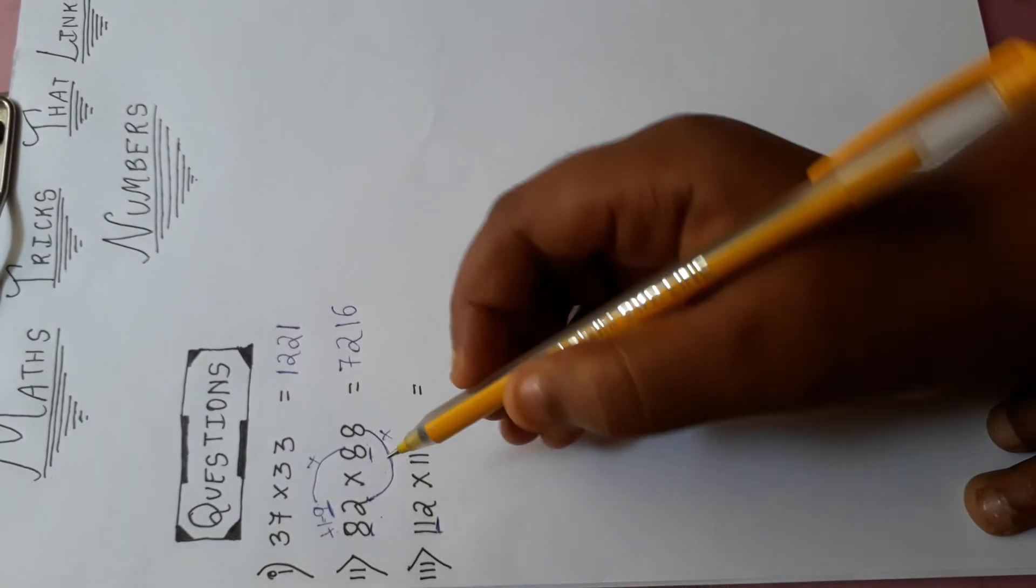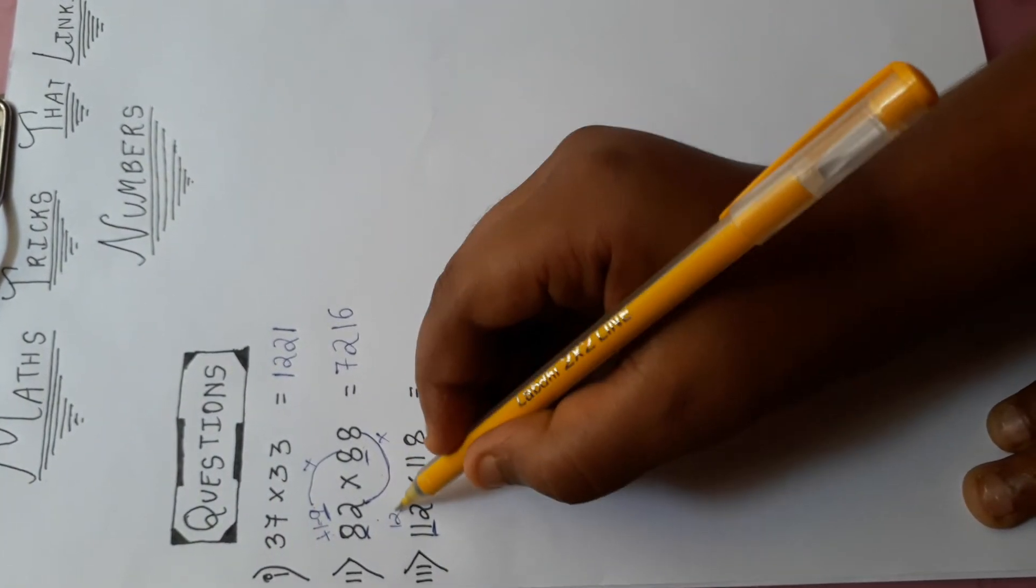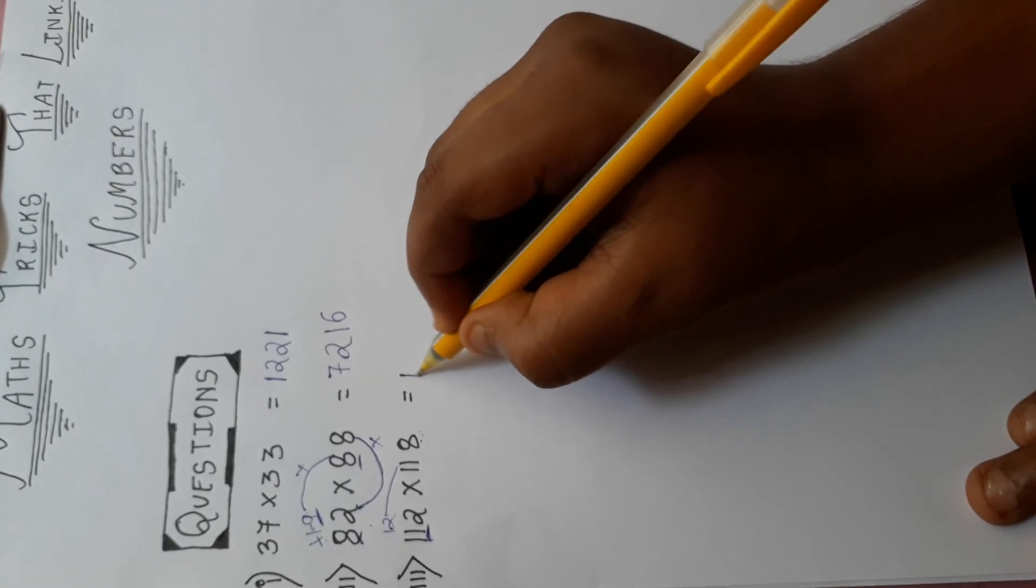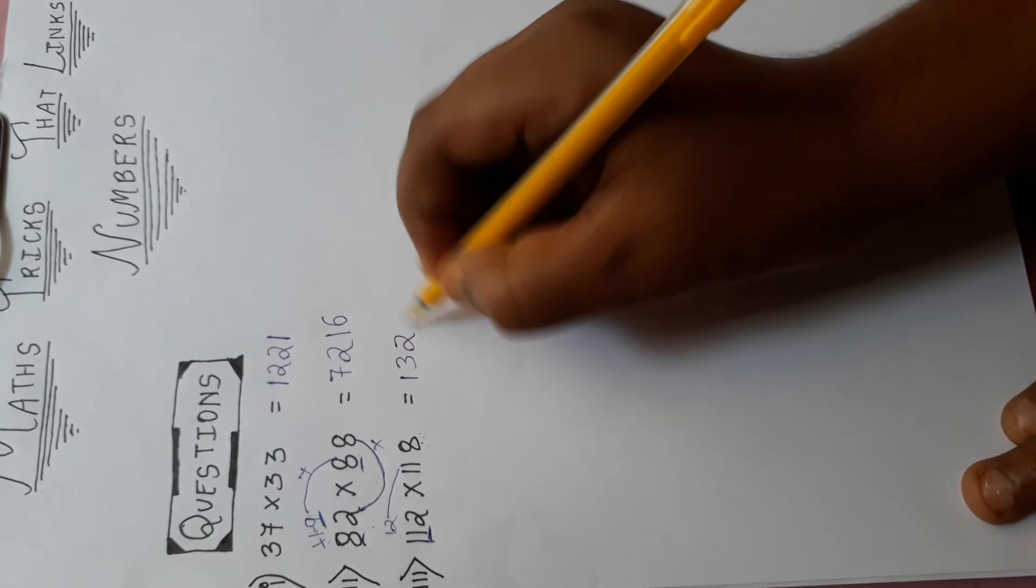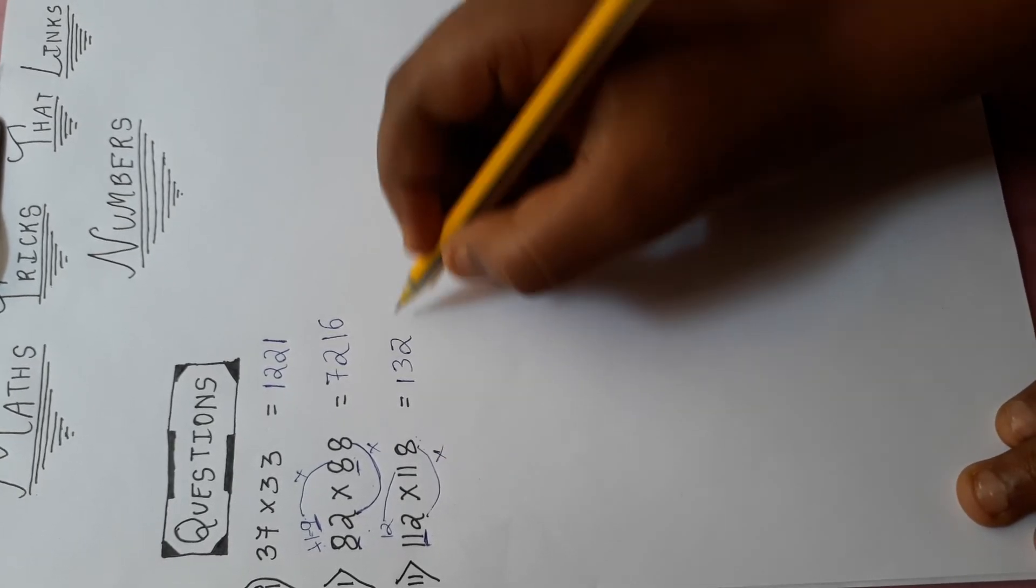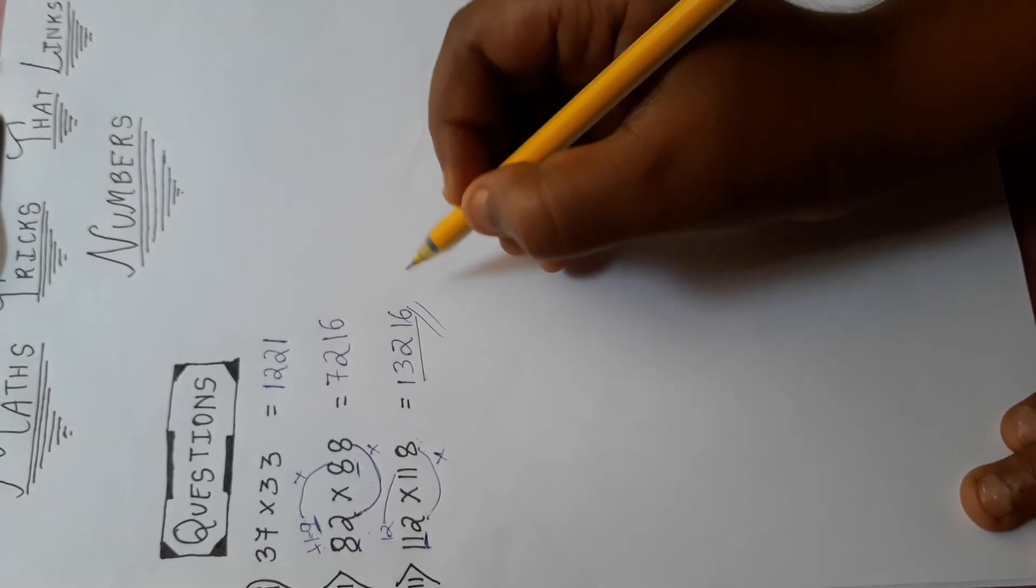See, this 11 is 11 plus 1. It will become 12. 12 into 11. 12 elevens are 132. 8 ones are 8. Twos are 16. Multiply this 2, it will become 16. This was your answer.